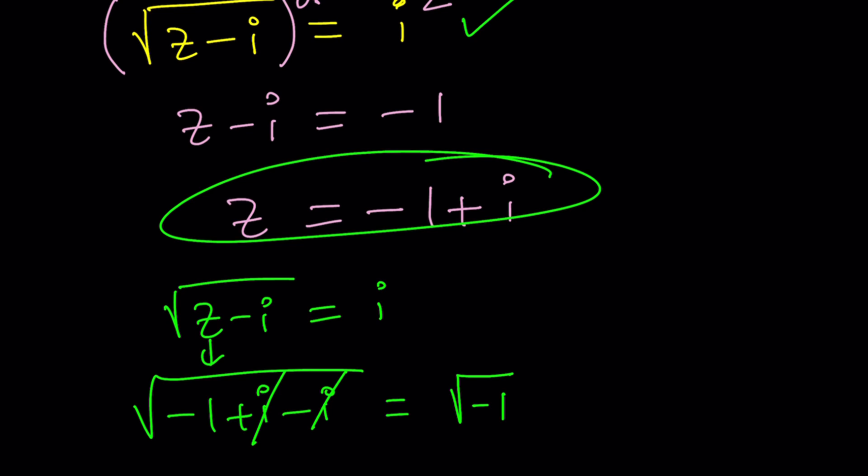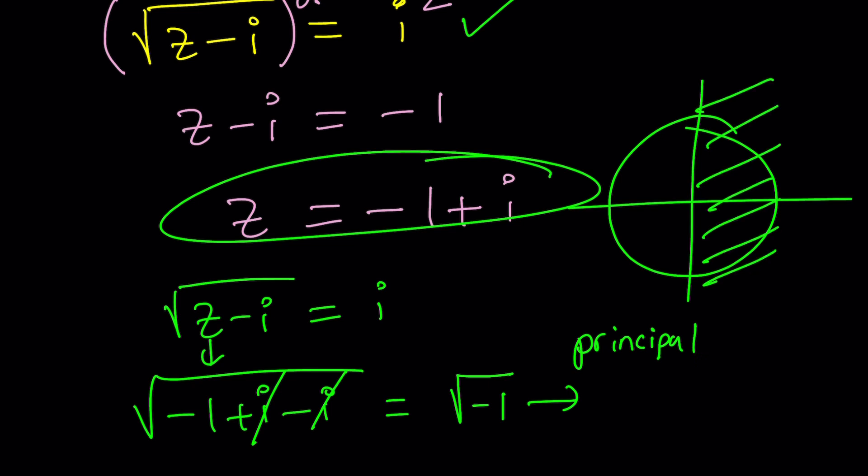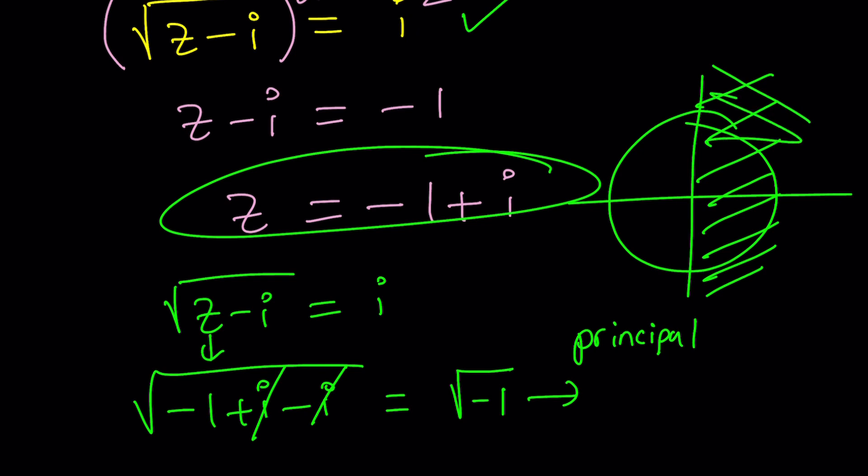But I use the square root symbol. So we're going to go with the principal square root. What does that mean? It means it's going to be on the right semi-plane. Is that a half plane or semi-plane? I think it's a half plane. The right half plane on the coordinate plane.